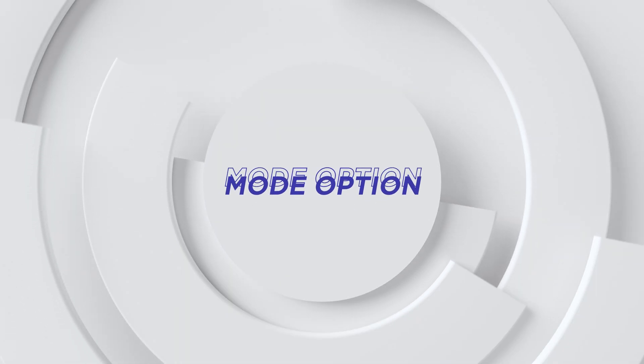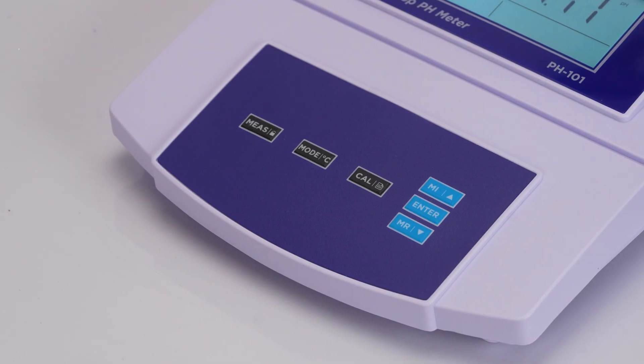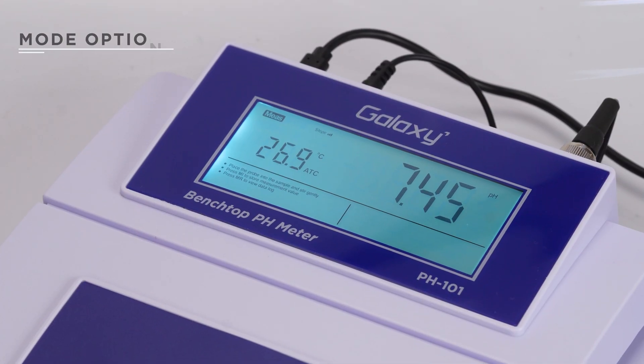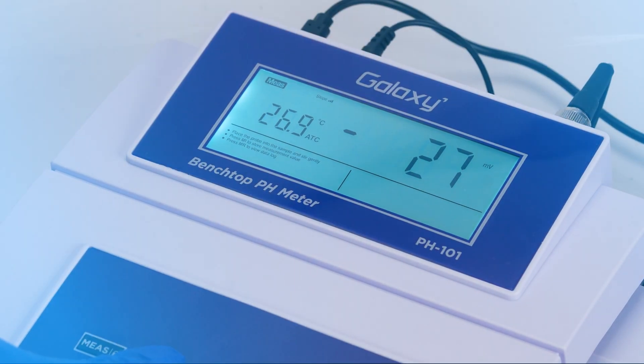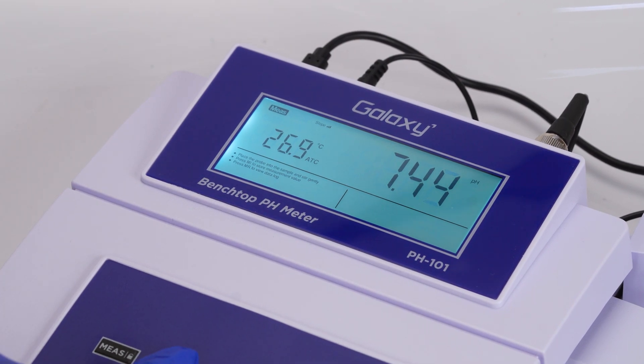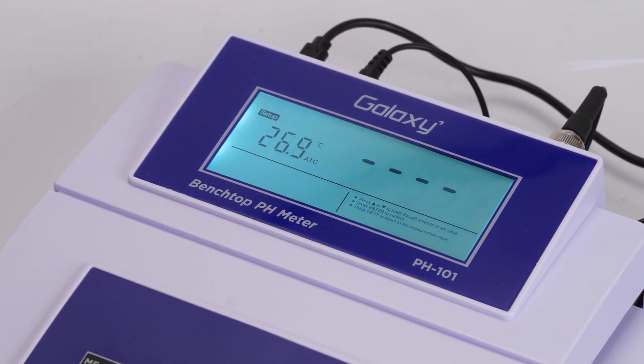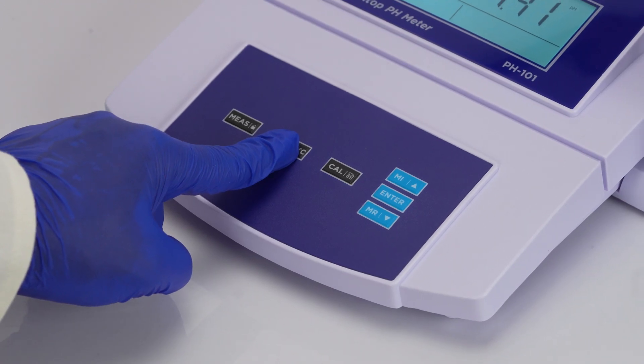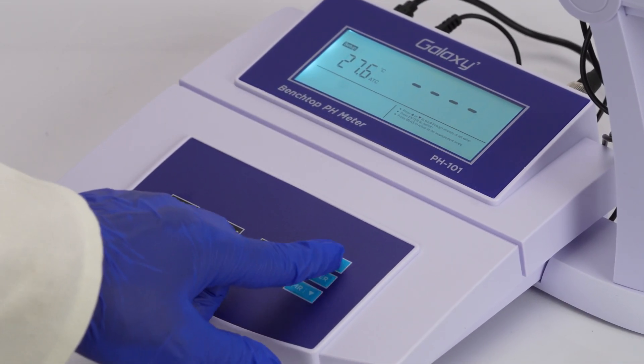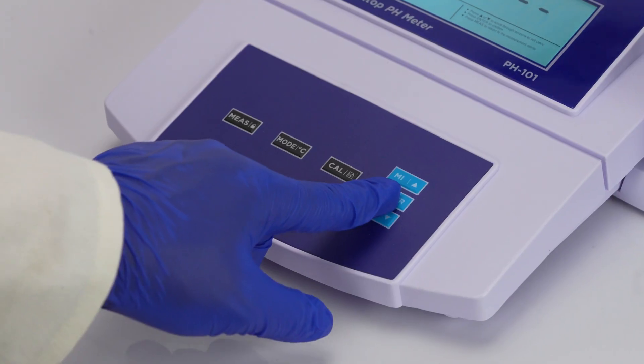Use the mode option to switch between pH and ORP. If the temperature probe is not detected, the meter switches to manual mode. Press and hold the mode key, adjust the temperature with the up and down keys, and press enter to save.